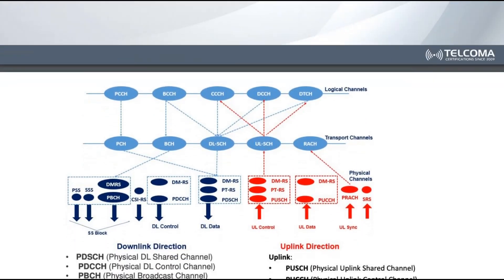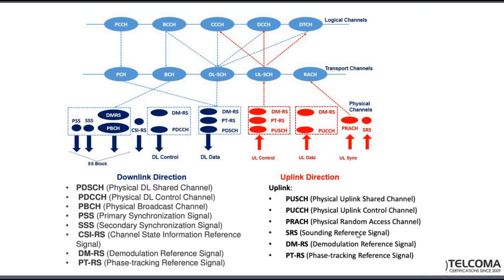In this slide we will be naming some of the 5G channels and how they are mapped onto the transport and logical channels. We are more interested in physical channels. Here we were talking about the SS block — synchronization signal block — which contains PSS and SSS to calculate PCI, DMRS for demodulation reference signaling, PBCH for MIB and SMIB information, and CSI-RS.